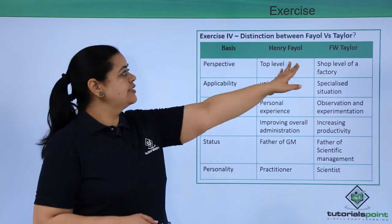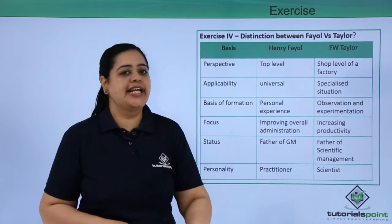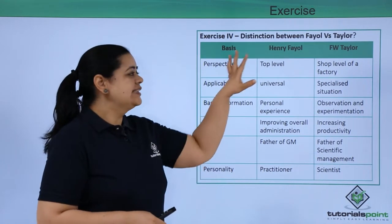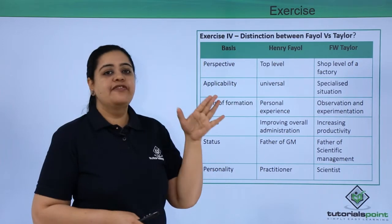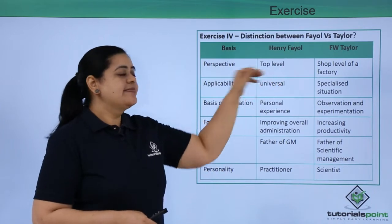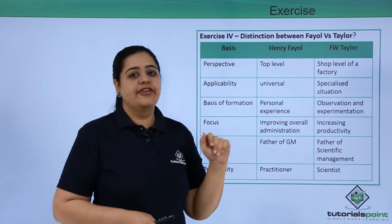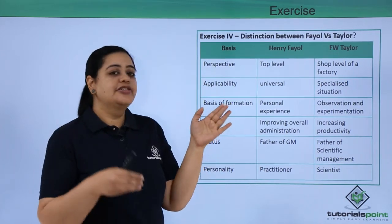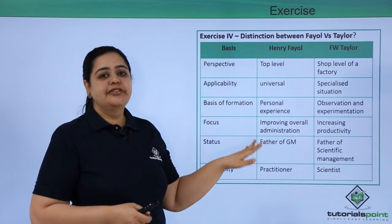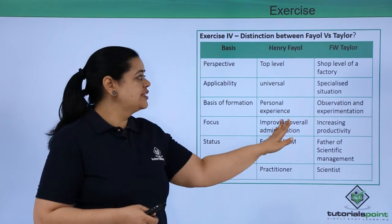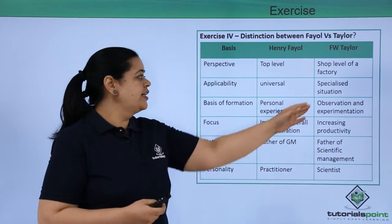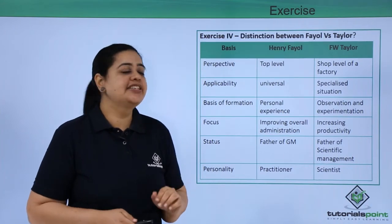We have been asked to distinguish between Henry Fayol and Taylor. In terms of perspective, Henry Fayol was interested in management — more specifically in managers, especially top-level management. F.W. Taylor was more interested in workers, so he focused on the shop level of a factory. The applicability of Henry Fayol's management principles was universal, whereas Taylor's principles were applicable for specialized situations.